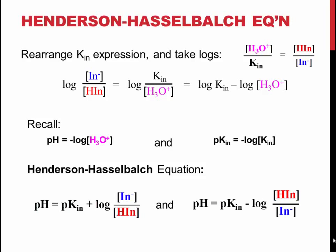This gives us the Henderson-Hasselbalch equation, which can be used to relate the pH of the solution to the indicator equilibrium constant and the concentrations of the conjugate acid and base of the indicator.